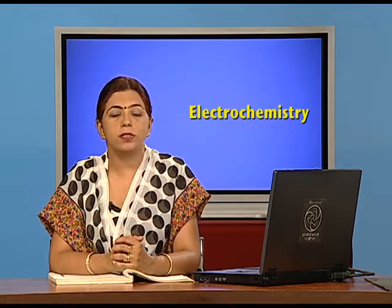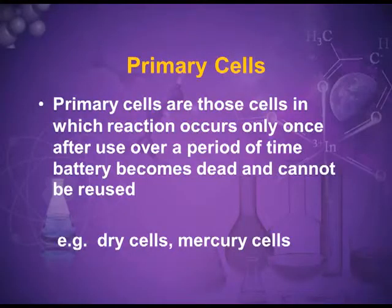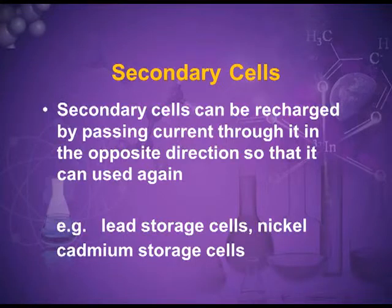Primary cells or primary batteries are those which, once used up, are wasted and cannot be recharged — we have to throw them away. Secondary batteries, however, are rechargeable; by applying an external electric current they can be recharged and used again and again. For example, the battery used in an inverter can be recharged, but cells used in remotes or watches, once used up, must be discarded.